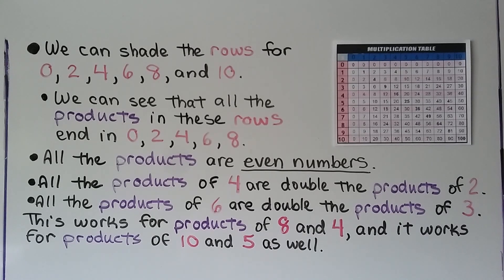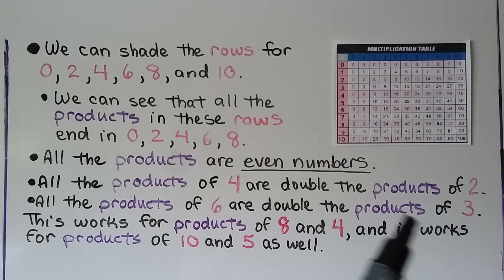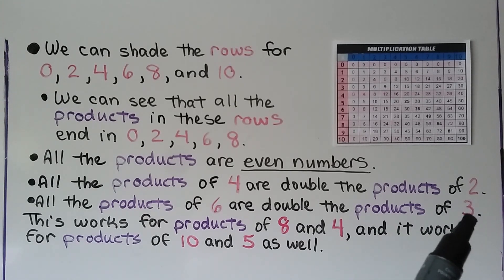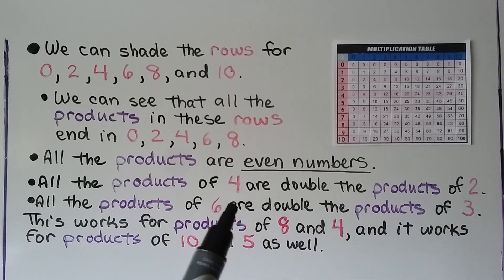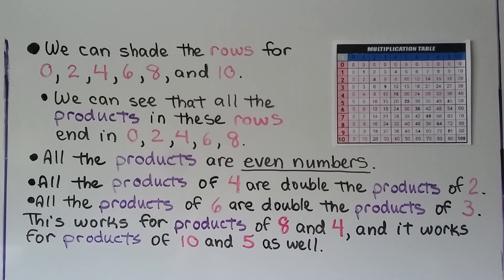All the products of 4 are double the products of 2. All the products of 6 are double the products of 3, because double 3 — that is, 3 plus 3 — equals 6. This also works for products of 8 and 4 because 4 plus 4 equals 8, and it works for products of 10 and 5 because 5 plus 5 equals 10.